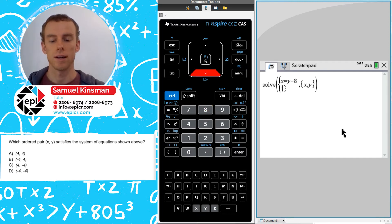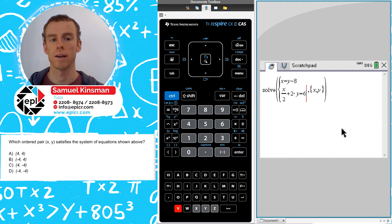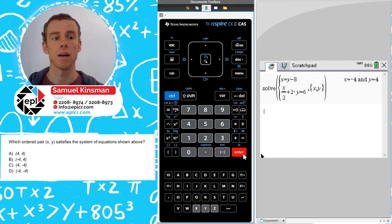So we've got x minus y equals 8, and we've got x over 2 plus 2y equals 6. So now we're going to press enter, and we get minus 4 comma 4. So therefore we know the answer is B.